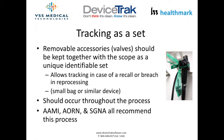Tracking endoscopes as a set means keeping all reusable removable items — valves, buttons, air-water channel cleaning adapters — together with the endoscope throughout reprocessing and storage as a unique identifiable set, using a bag or similar device. Because valves don't have serial numbers, there is no other way to track them back to the scope and therefore to the patient. This is required by AAMI, AORN, and SGNA guidelines and enables pulling everything out of circulation in the event of a reprocessing breach.